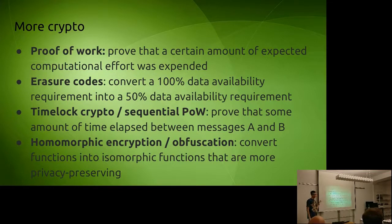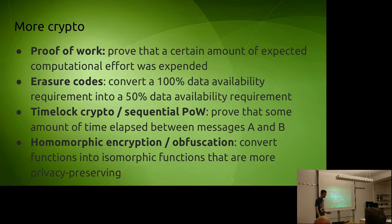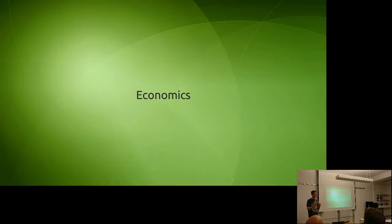Time-lock crypto proves topological order and contains a built-in clock: if B is a time-lock encrypted value on top of A, then not only did B come after A, but B came at least some number of seconds after A. Homomorphic encryption and obfuscation can convert functions into forms that are more privacy-preserving — essentially black-box computation even when the computation is being done in the clear. If you think like a crypto-economist, you don't necessarily need to care about the details of how these properties are implemented, just about the interface: inputs, outputs, and properties.